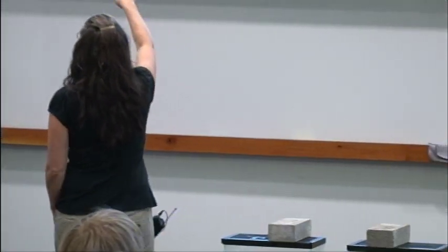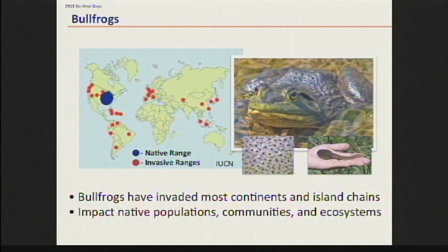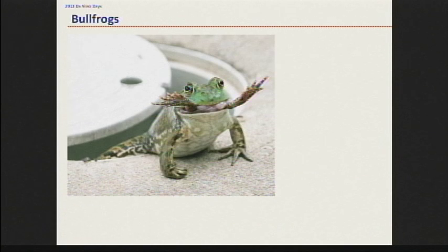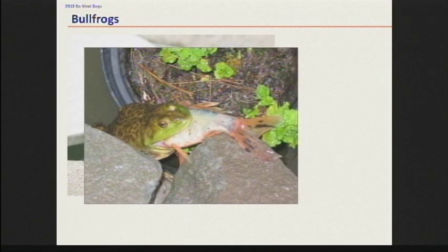Their native range is along the east coast — the east side of the U.S. and up in Ontario — but they have spread well beyond where they should be. Part of it is because they can eat anything. They are gape-limited generalist predators — they will eat whatever can fit in their mouths. They sit, and if something walks in front of them, they're going to try and eat it. This includes other frogs, and anything they can get their mouths around.